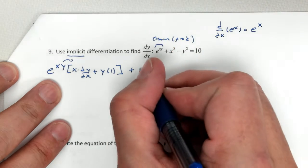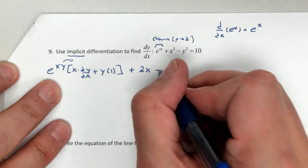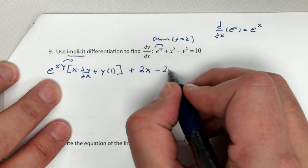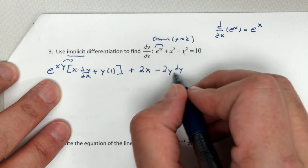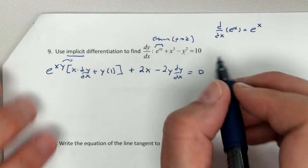Plus the derivative of x squared is 2x minus, be careful, here we're going to get 2y. But don't forget, I'm taking the derivative of a y, so I need my dy dx. And that's going to equal zero right there.